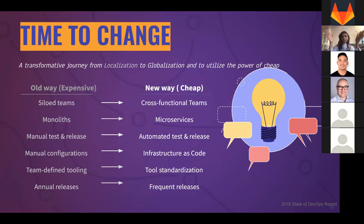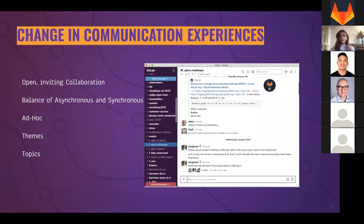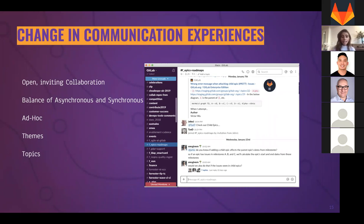There are little tricks to get better in the digitization journey. The first is changing our communication experience. It may seem trivial, but there is enormous cost in time spent sending emails. For example, using Slack helps open and inviting collaboration with a balance of asynchronous and synchronous communication. You can have channels to reach the right audience and set topics accordingly. Small steps like this improve visibility, collaboration, and transparency in communication.